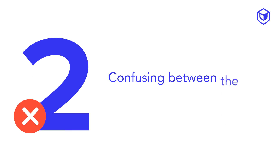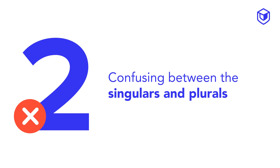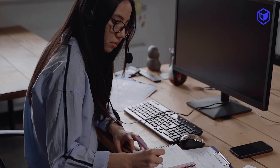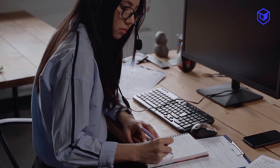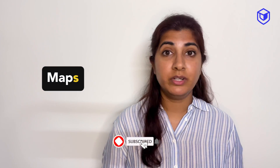Error number two is confusing between singulars and plurals when writing your answers. In the listening audio, you need to write the word that you hear — you cannot change or modify it. For example, if you heard the singular word 'map' but you write the plural 'maps,' you wouldn't get marks because you've changed the word.